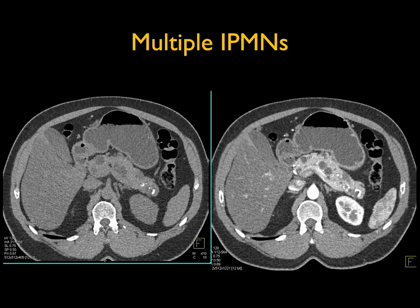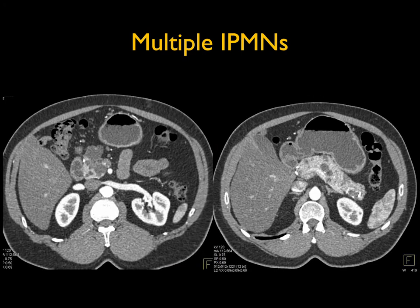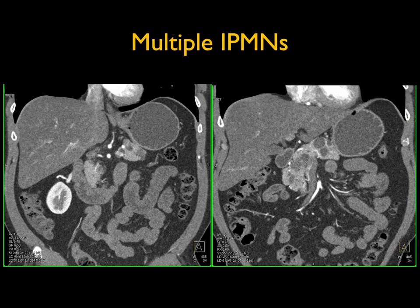Here's a patient with multiple IPMNs — the one by the tail has calcifications, but there are multiple IPMNs present. This is a challenge in terms of management: we worry about IPMNs having malignancy. Do you do a distal pancreatectomy or a total pancreatectomy? A total pancreatectomy would cure the patient, but patients develop diabetes, often have significant post-op problems, and their lifespan is shortened. We tend to look at the largest lesion as the one of most concern, but you need to look at all lesions carefully using CT and MR, with careful short-term follow-up.